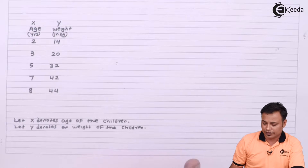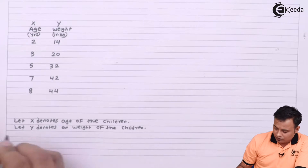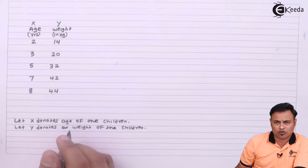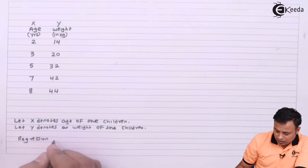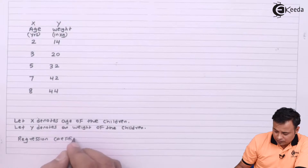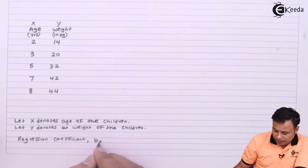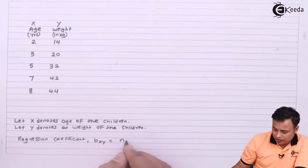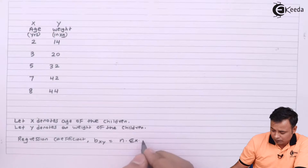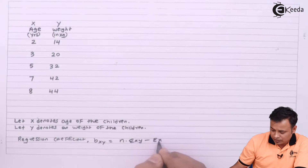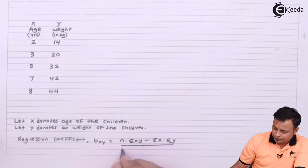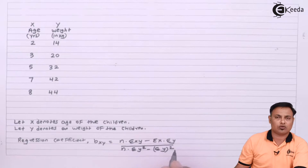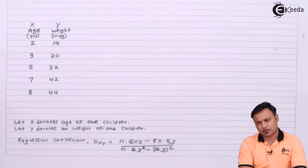For the regression equation we will first find out the regression coefficient b_xy. The formula for b_xy is: n × Σxy − Σx × Σy, all divided by n × Σy² − (Σy)². This is the basic formula for the regression equation x on y.